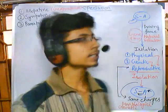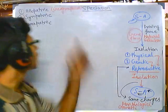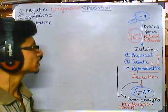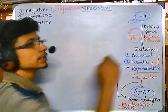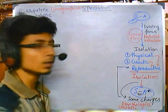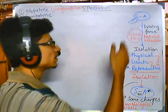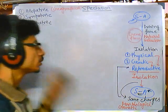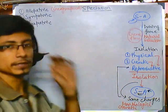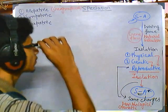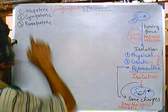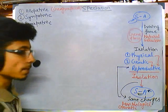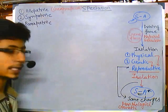We have already discussed about allopatric speciation, in which we have seen that gene flow plays the major role as the driving force for isolation, and we have also seen the geographical or physical isolation. Now let us talk about parapatric speciation, and then we'll be talking about sympatric later.